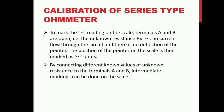The infinity mark is obtained when terminals A and B are open — no current flows and there is no deflection. By connecting different known values of resistance to terminals A and B, intermediate markings can be done on the scale, so the scale can indicate values between 0 and infinity.